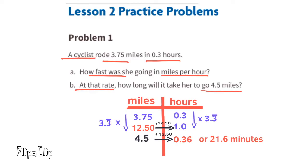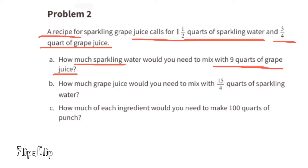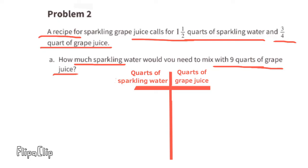Problem number two: a recipe for sparkling grape juice calls for one and a half quarts of sparkling water and three-fourths quart of grape juice. Part a: how much sparkling water would you need to mix with nine quarts of grape juice? We can make a table with quarts of sparkling water on the left and quarts of grape juice on the right.